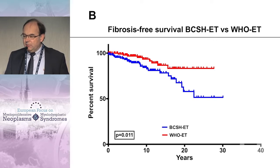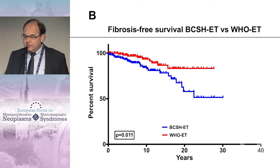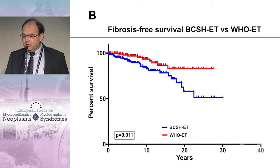The fibrosis-free survival of British ET compared to WHO-classified ET shows a higher percentage of transformation to fibrosis when patients are characterized according to the British classification, and even worse outcomes when applying the PVSG classification.